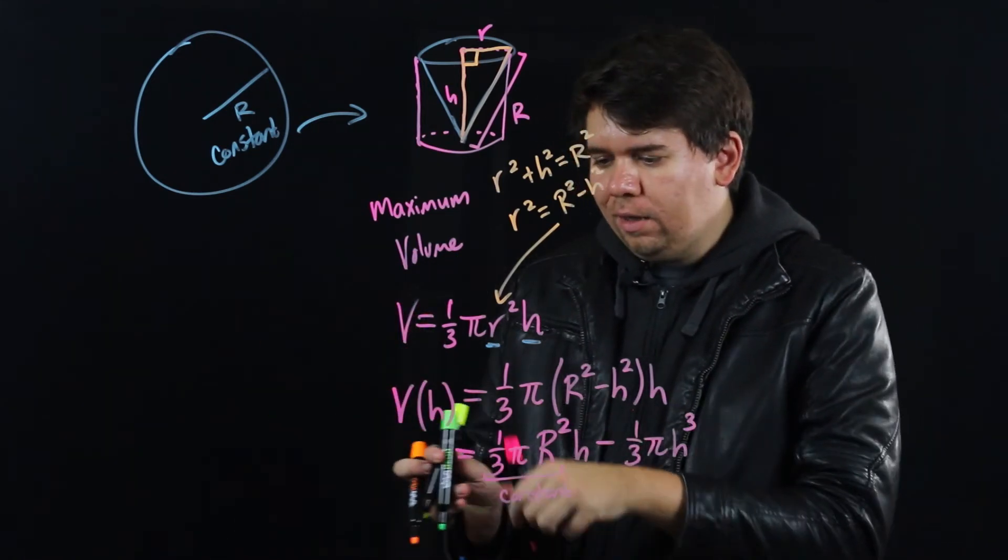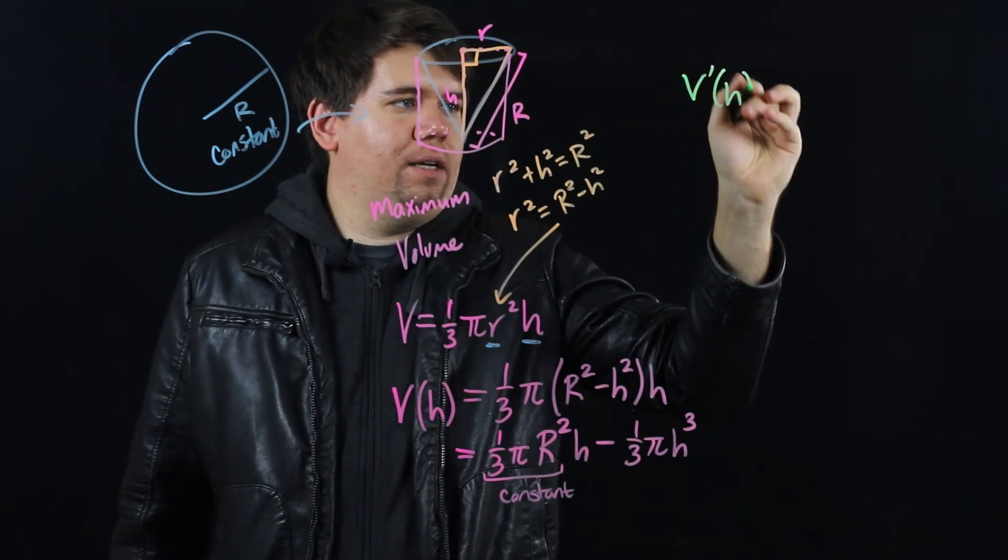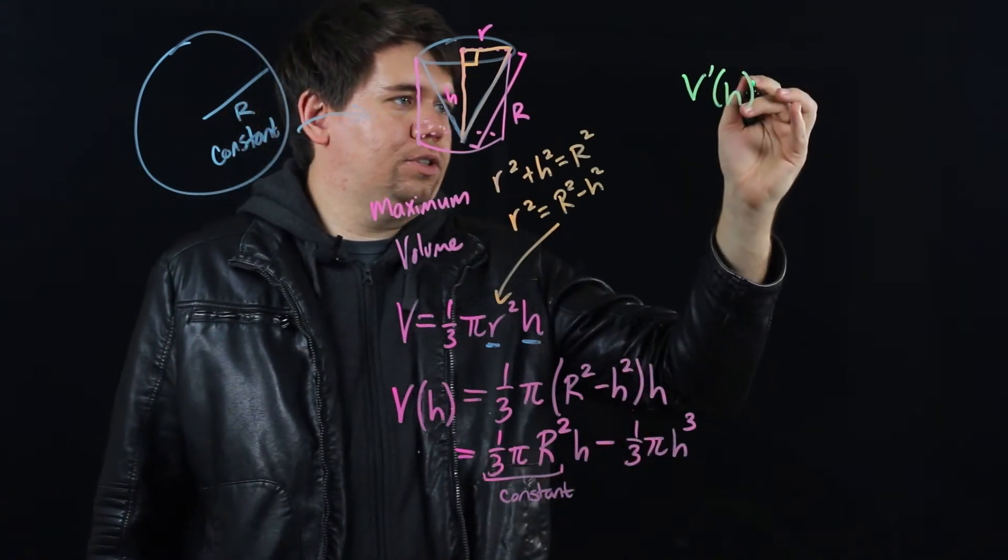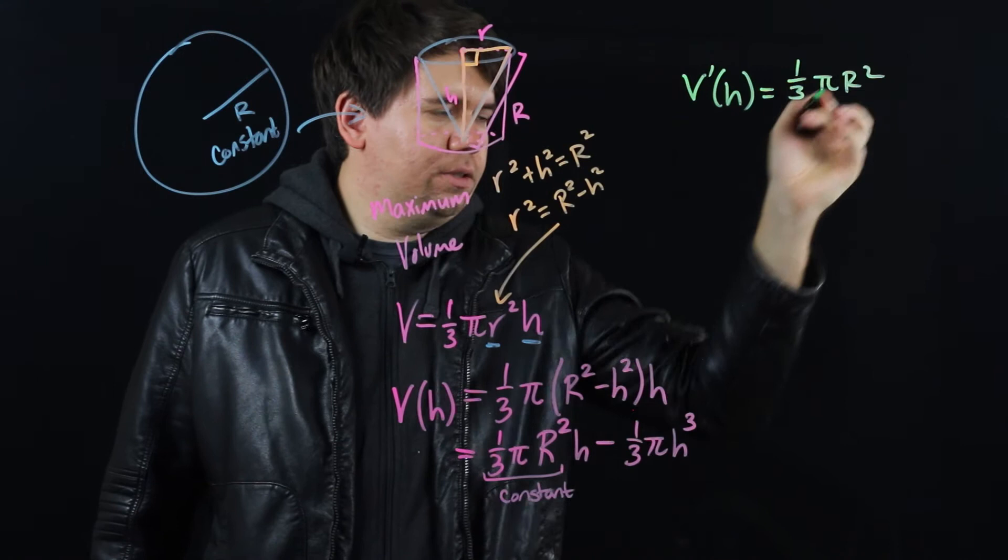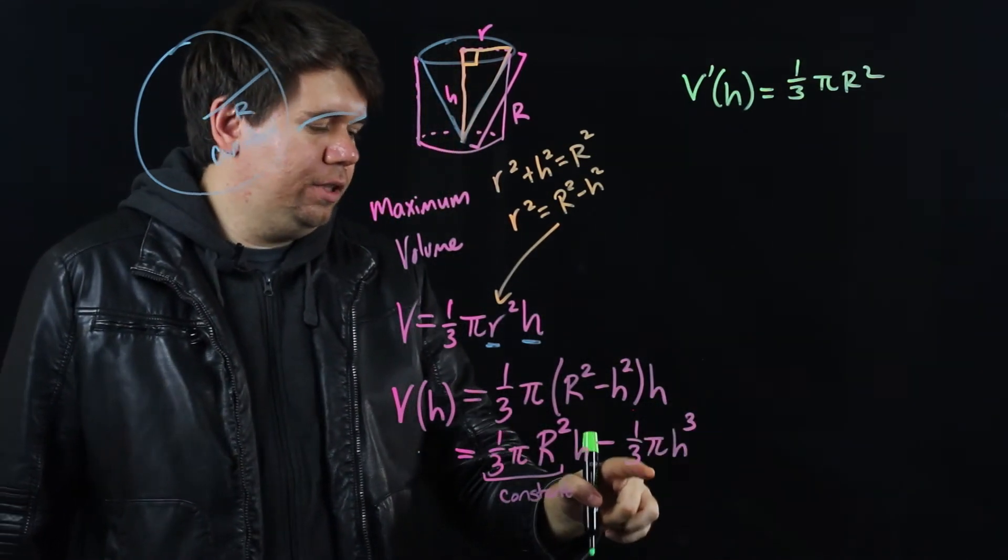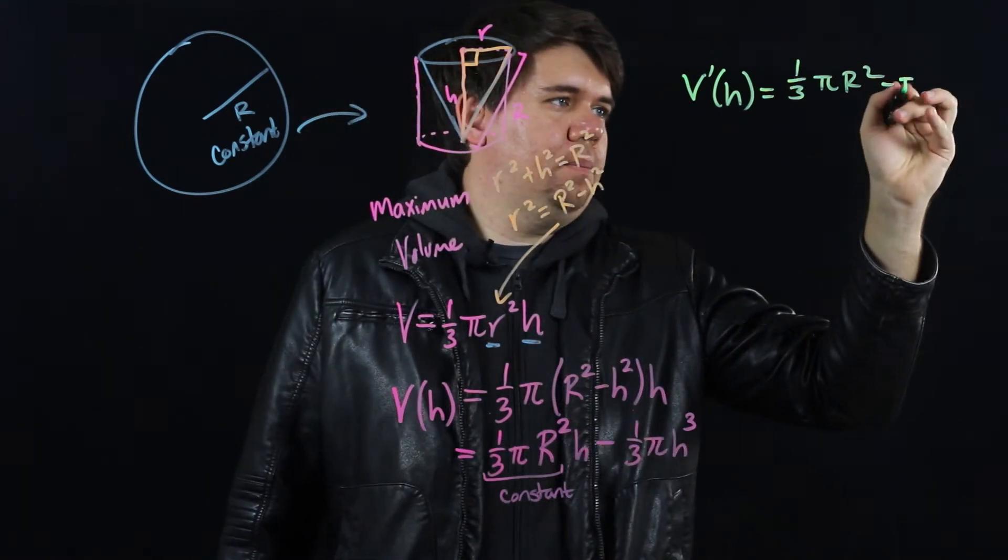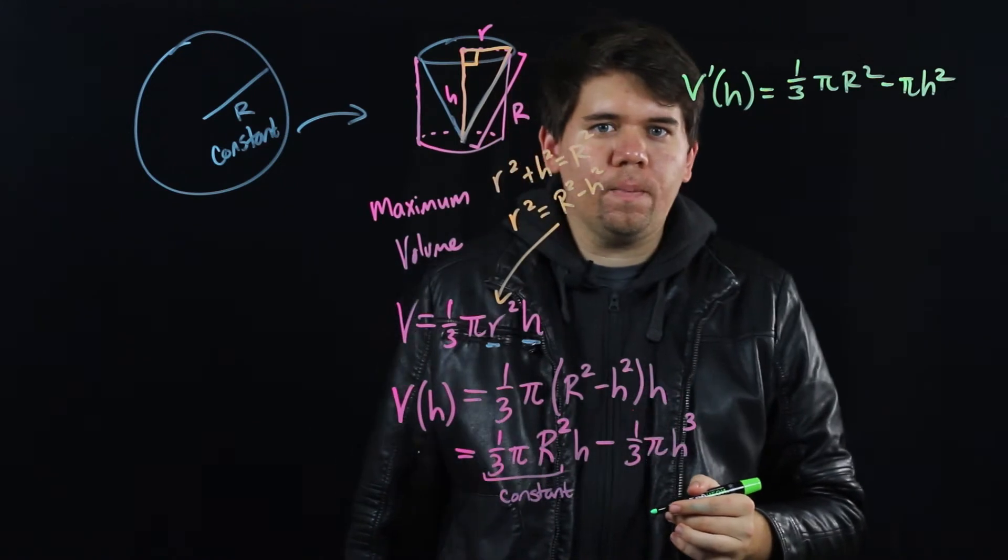When you calculate the derivative, when you calculate your v prime of h, you're just left with the constant in front of the h. You're just left with one third pi big R squared. And for the second term, minus the three will come down, canceling with the one third, giving me pi h squared.